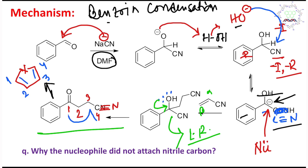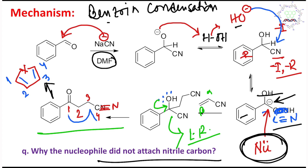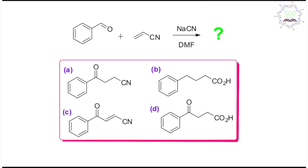A question arises: why did the nucleophile not attack the nitrile carbon? It is possible, but there is a competition between Michael addition (1,4-addition) and 1,2-addition. The beta carbon is softer in nature, so Michael addition is preferred — that is why the attack happens there. The answer is option A.